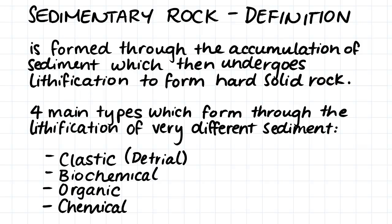Clastic sedimentary rock is made from fragments of weathered rock called clasts. Biochemical sedimentary rock is made up of shells which are cemented together. Organic sedimentary rock is formed by the accumulation of organic matter, including plants and animals, which are then altered underground. And finally, chemical sedimentary rock is made up of minerals that crystallize and precipitate directly from water.